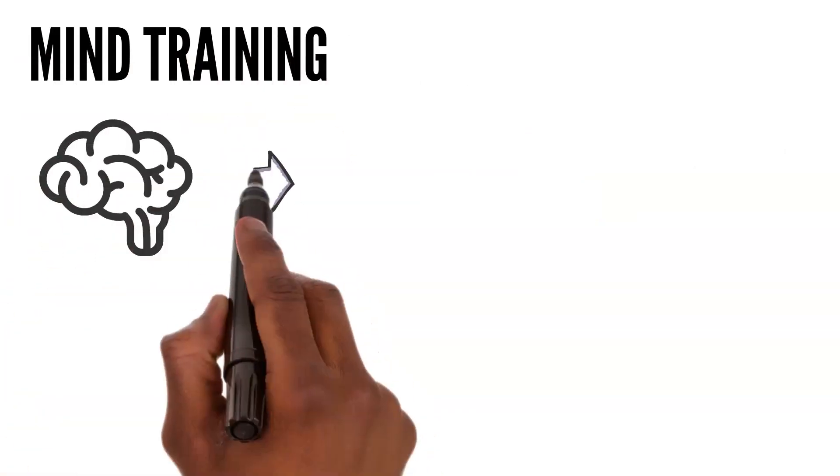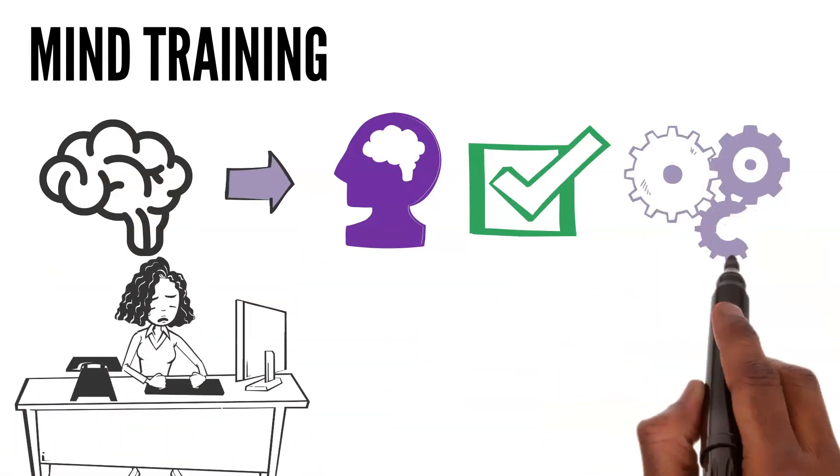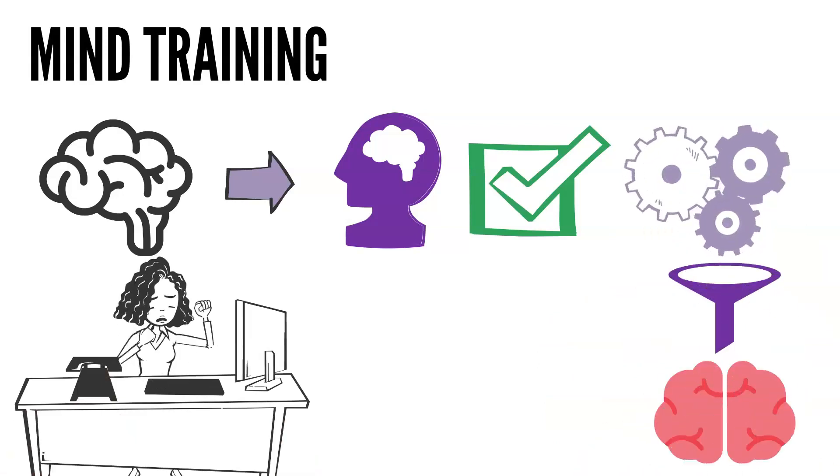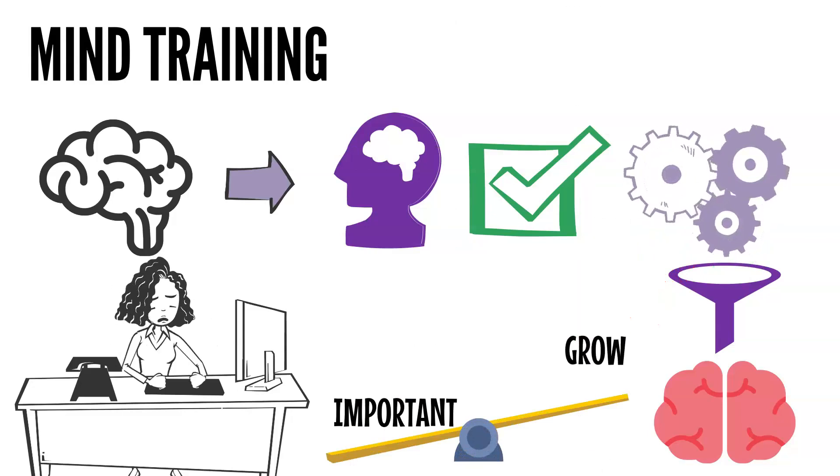Mind training: Training your brain to control your subconscious is essential, otherwise you can end up drowning in a sea of information. Once you've learned to put a filter on what your brain should consume and what not, you can learn what is important and leverage it to grow.